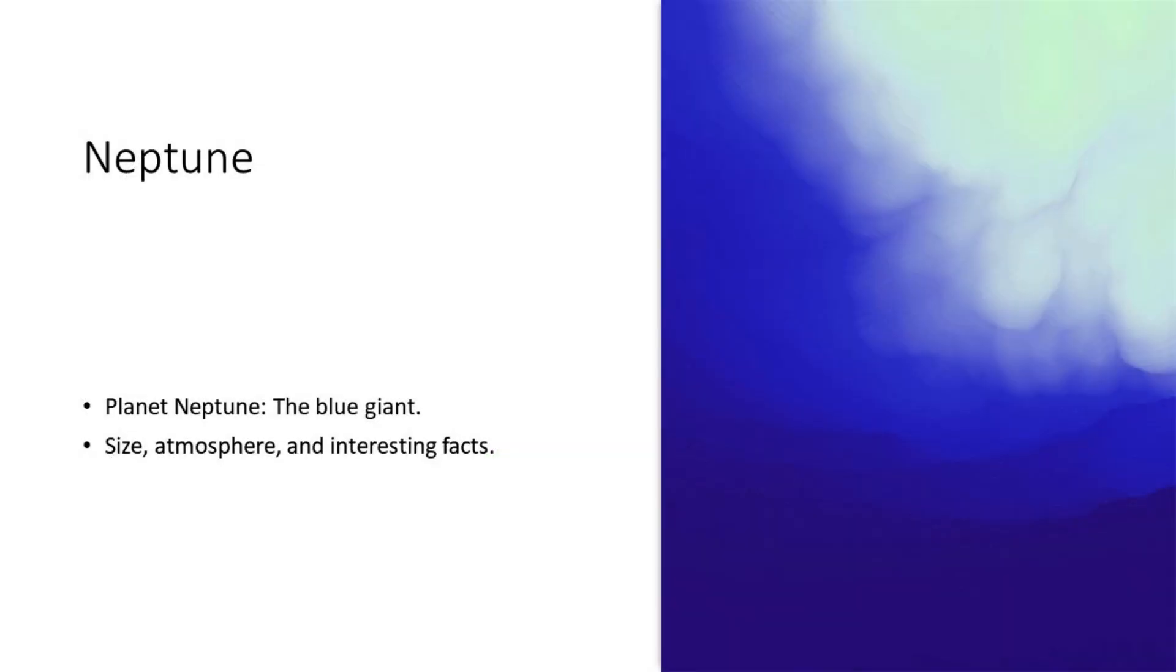Neptune, the blue giant, stands as a sentinel at the edge of our solar system, guarding the realms of the unknown. Its intense blue coloration, caused by methane absorption of red light, paints a vivid picture of the planet's atmosphere. Studying Neptune offers insights into the distant regions of the solar system and the mechanisms driving the formation and evolution of gas giants.